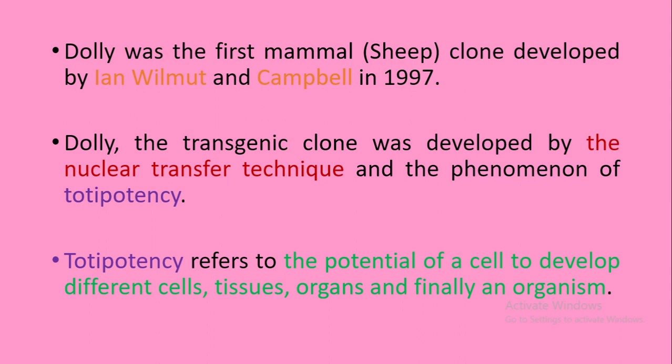Dolly was the first mammal clone, developed by Ian Wilmut and Campbell in 1997. Dolly, the transgenic clone, was developed using the nuclear transfer technique and the phenomenon of totipotency.